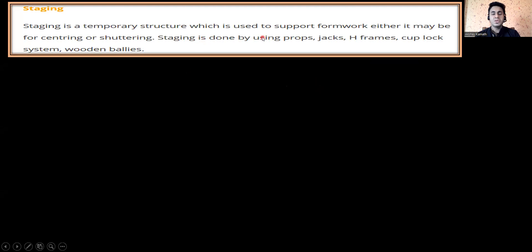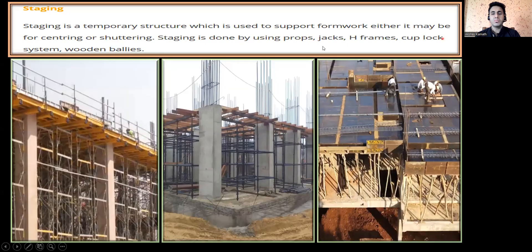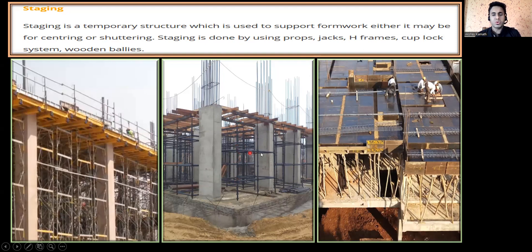First, what is staging? It is a temporary structure which is used to support the formwork, either centering or shuttering. Staging is done using props, jacks, edge frames, cup lock systems, wooden ballies, etc. You can see here — this is my column that has been cast, then the beam shuttering and slab centering come above, and the MS props and wooden batons support them. That entire system is called staging.